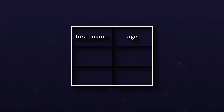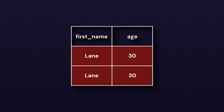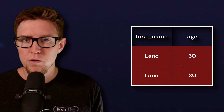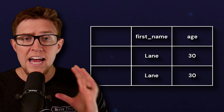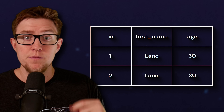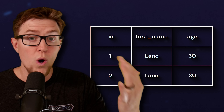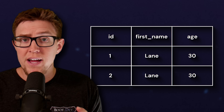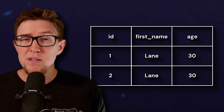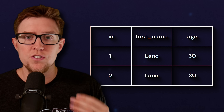Say we have a user in that table, Lane, who's 30. If another user signs up with the same name and age — Lane, 30 — we get a duplicate row. And this is what first normal form is supposed to prevent, because no duplicate rows are allowed. To fix it, we can just add a unique ID column as the primary key, giving the first row ID one and the second row ID two. These ID numbers are generated by the application so they can't be duplicated, no matter what the user's name or age is.